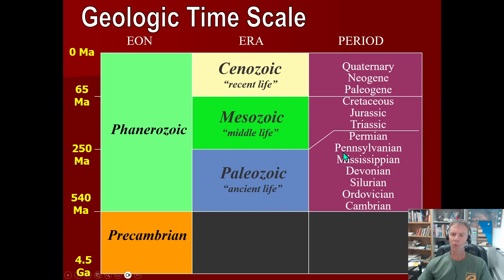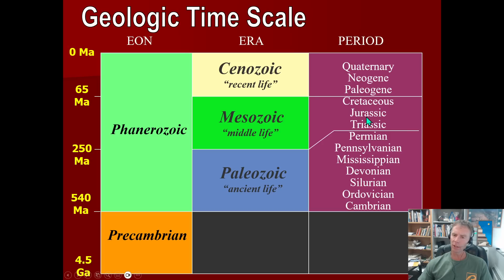A lot of these terms came from the place — the location — where those early geologists were studying that time period. Many come from places in Europe. Devonshire is an area in the UK. The three bottom ones — Silurian, Ordovician, and Cambrian — are Celtic names from the area in Wales. And the Jurassic is like the Jura Mountains of Switzerland. You can get on the internet and look at the origin of these names.